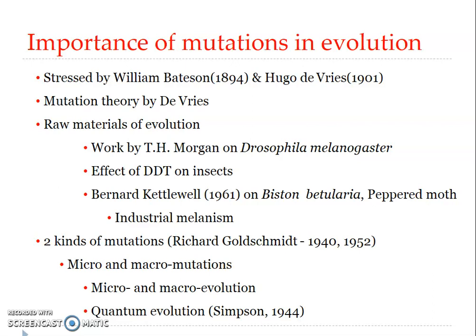Mutations are considered the raw materials of evolution. The modern concept of mutation is due to the work of Thomas Hunt Morgan on Drosophila melanogaster — the fruit fly. Mutations were defined as changes in a single gene with effects ranging from barely detectable to very drastic. In 1910, Morgan discovered many spontaneous gene mutations in Drosophila, such as white eyes and yellow body color. In his book 'The Scientific Basis of Evolution,' Morgan regarded mutations as the only significant factor capable of bringing about evolutionary changes, including the origin of more complex organisms.